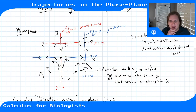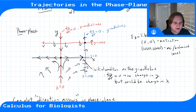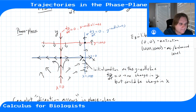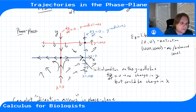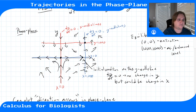Filling in the arrows between the nullclines: in the lower-right region the flow is down and to the right; in the upper-right region it's up and to the right; in the upper-left region it's up and to the left; and in the lower-left region it's down and to the left.